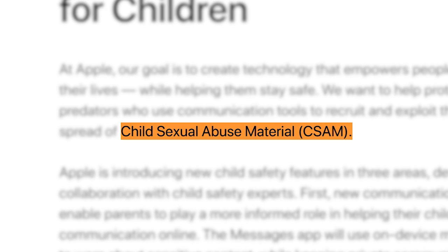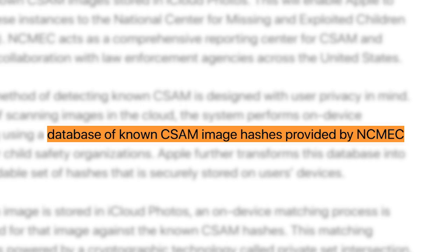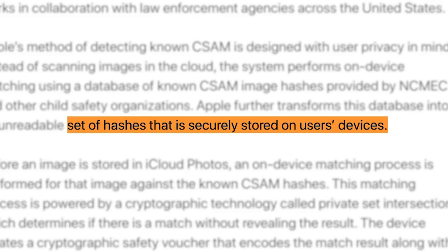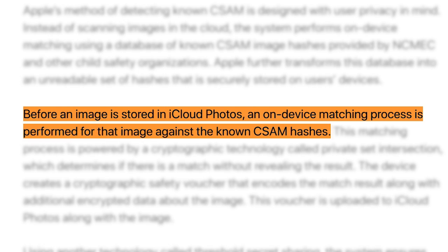Apple has teamed up with child protection organisations to procure a library of many thousands of these CSAM images. Apple has run all of these pictures through an advanced hashing function, producing a number for each which identifies the image. All these thousands of hashes will be stored locally on your iPhone or iPad. Whenever a photo stored on your phone is uploaded to iCloud, your iOS device will check it against the local library of hashes.